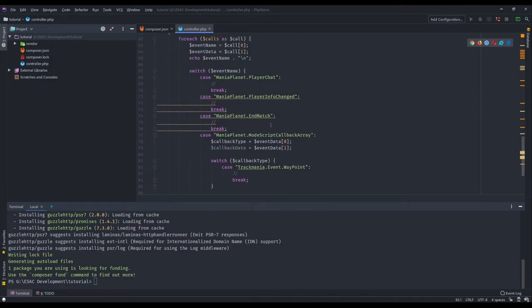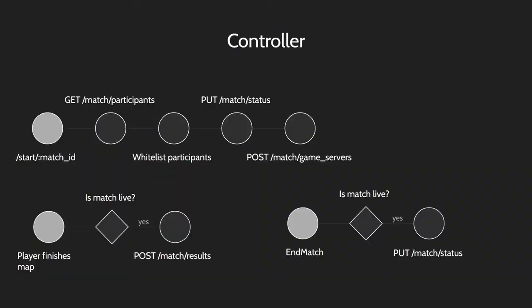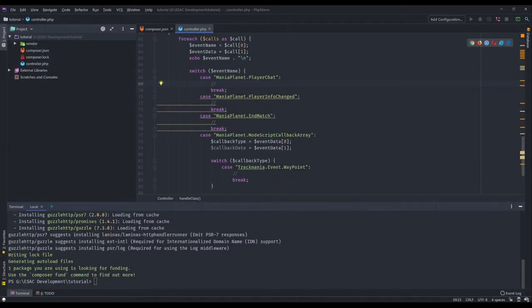Let's jump back to the presentation so you can understand what I've done here. These are the events we specified at the beginning: the first is the chat command, handled in the switch we just created; the second is when a player finishes the map — that's the Waypoint event; the end match is another event covered; and the fourth is when a player joins the server, so we can kick them if they're not whitelisted or don't have access to the match.